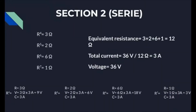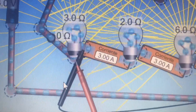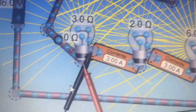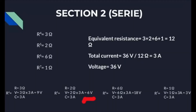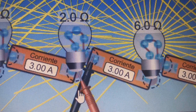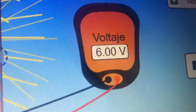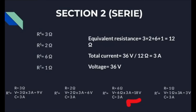With the total current of 3 amperes we can calculate the voltage of each resistance by multiplying the current by the resistance. For 3 ohms we get 9 volts, for 2 ohms we get 6 volts — the simulation clearly matches our calculations in both cases.